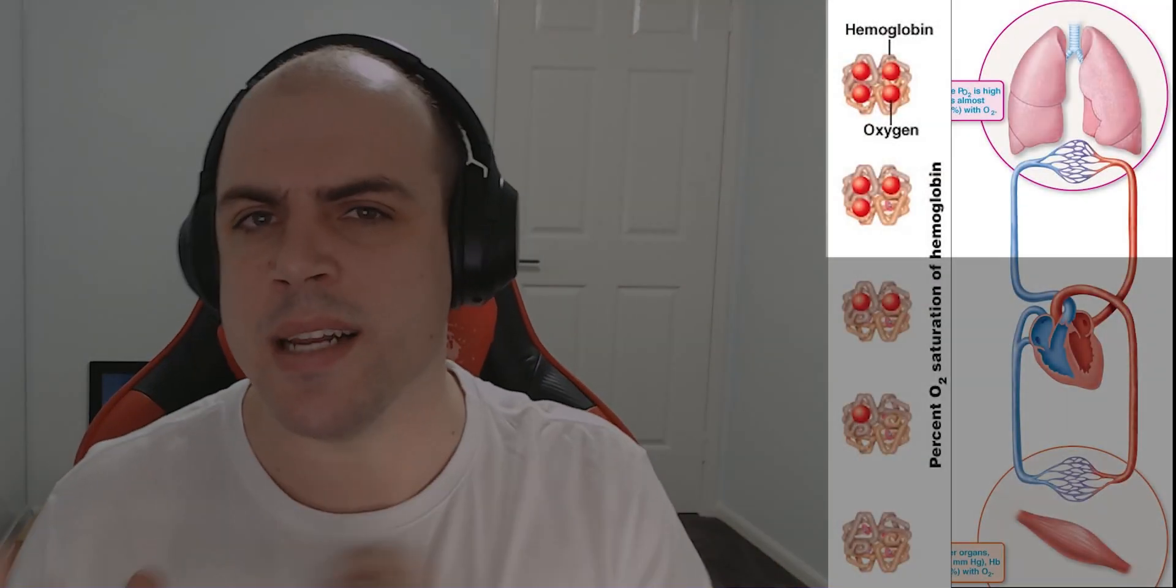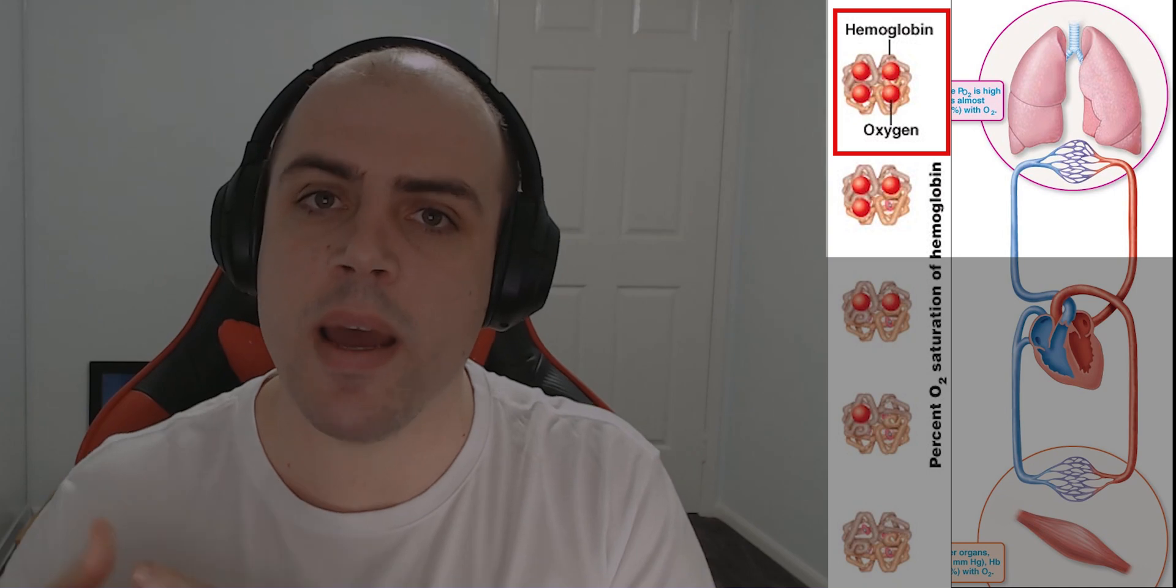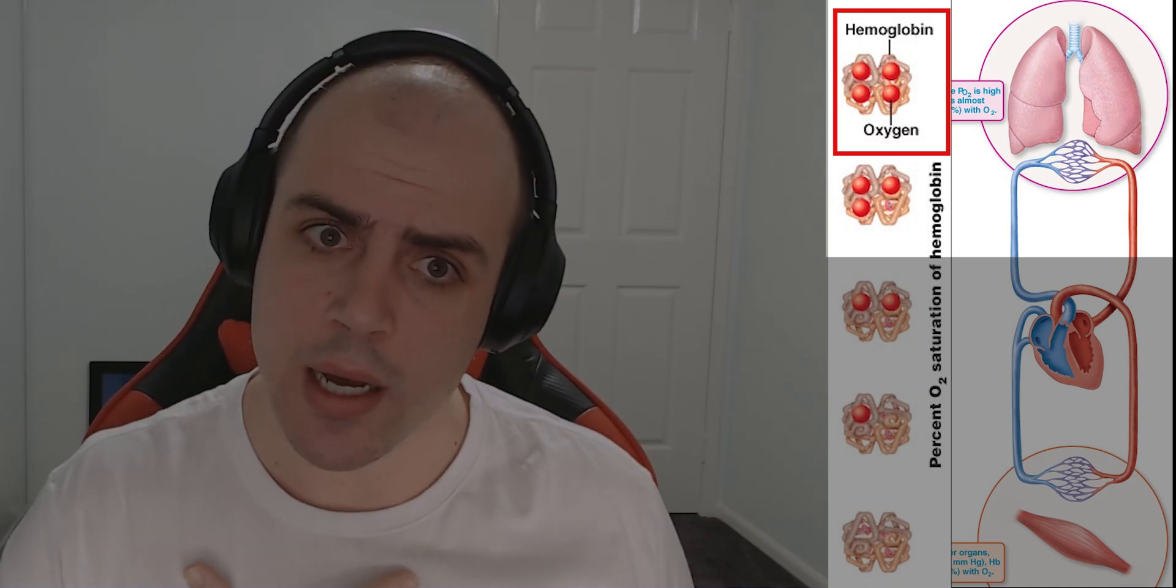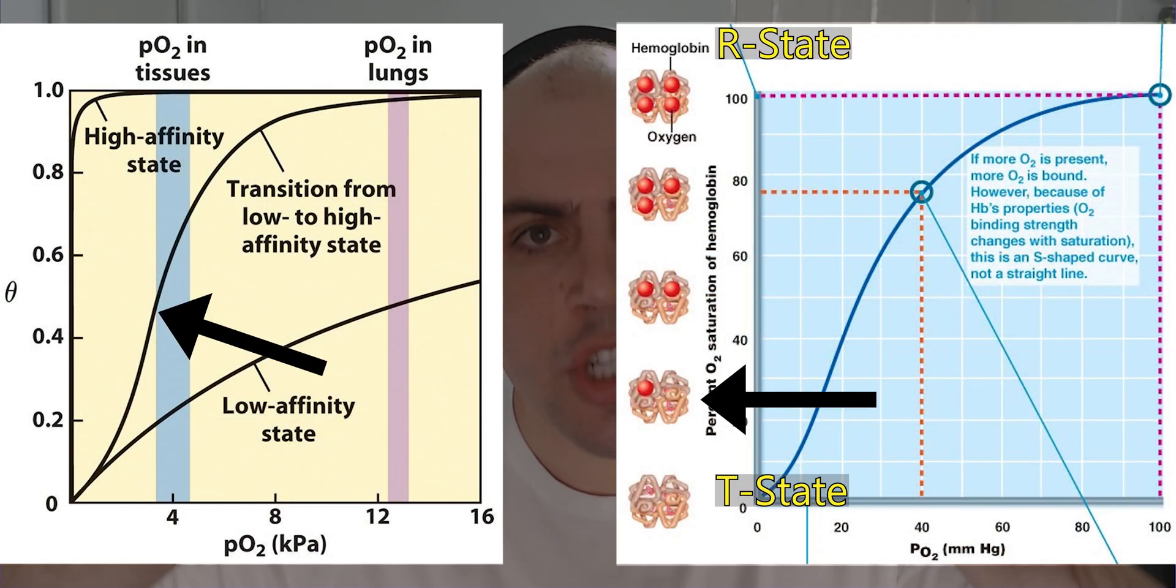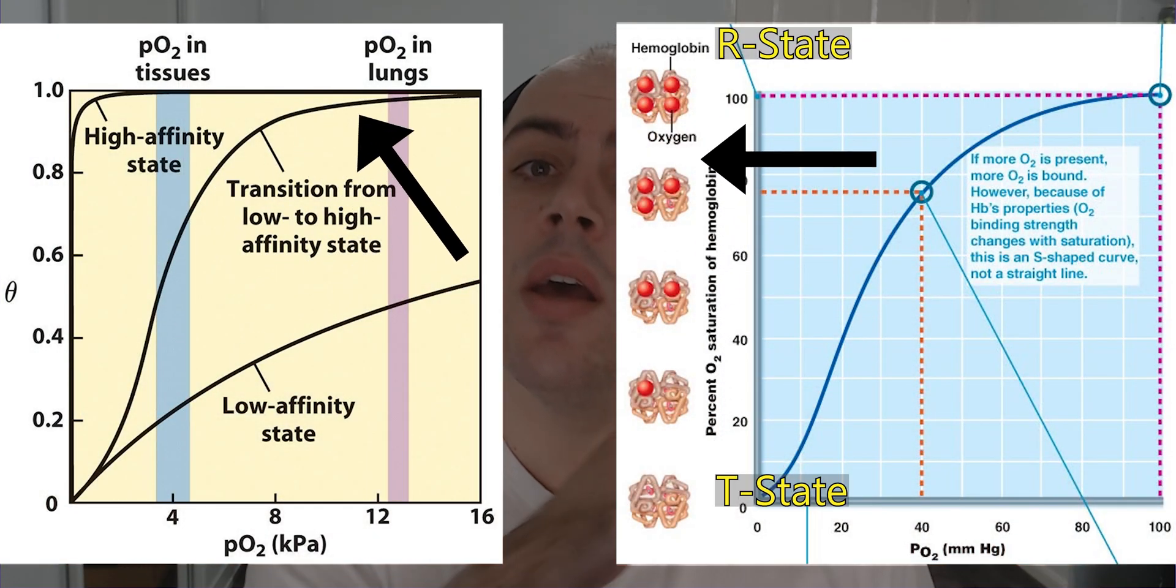Where we left off in our previous video was exploring hemoglobin in its R state. This is when hemoglobin has moved to the lungs and has scooped up and collected as much oxygen as it can, causing that hemoglobin to shift into its R state, which is increasing its binding affinity.